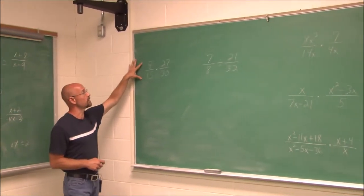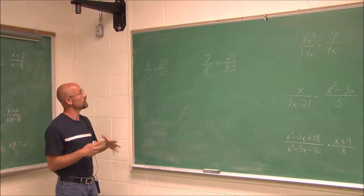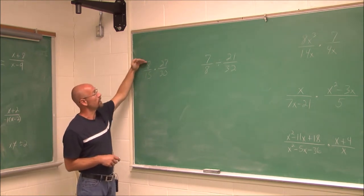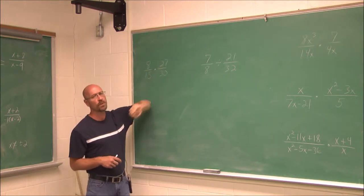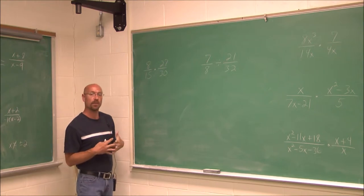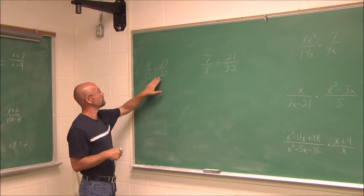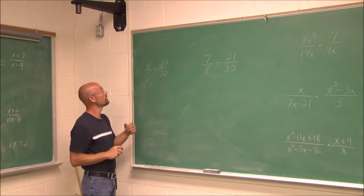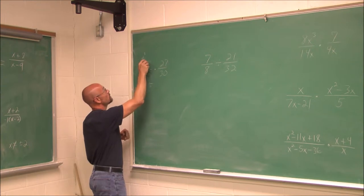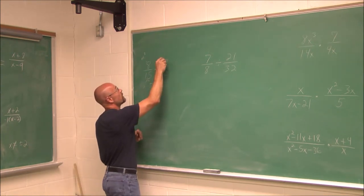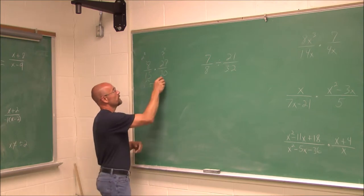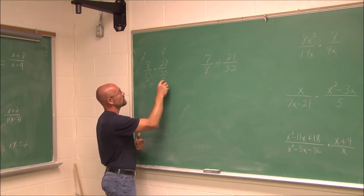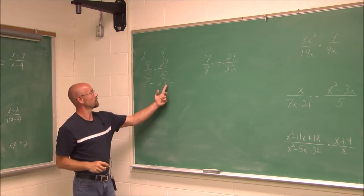Now that we understand restrictions, let's start multiplying and dividing. When multiplying two rational numbers, instead of multiplying large numerators and denominators directly, we reduce right away by factoring. For example, 15 is 3 times 5, 8 is 2 cubed, 27 is 3 cubed, and 30 is 2 times 3 times 5.